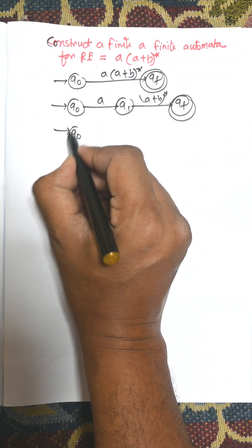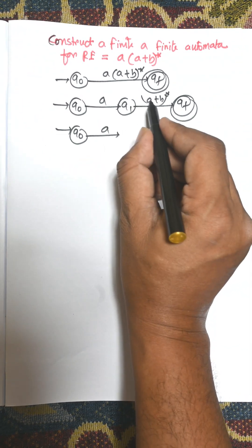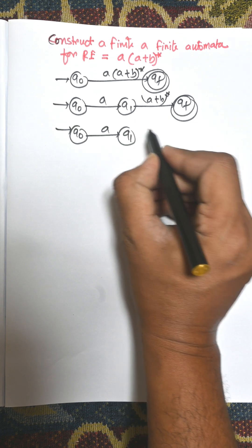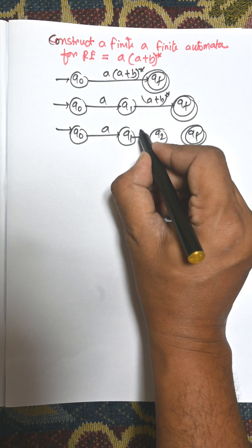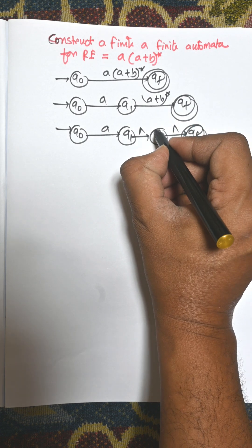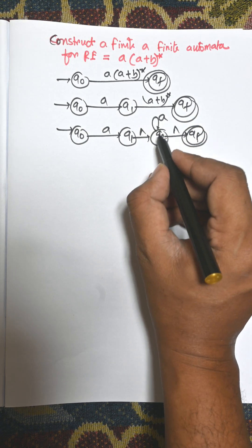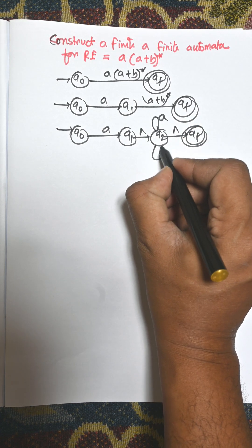Now consider this one A plus B whole star, there is another state Q2. There is empty symbol, another empty symbol. A plus B means there is a cycle of A and another cycle of B.